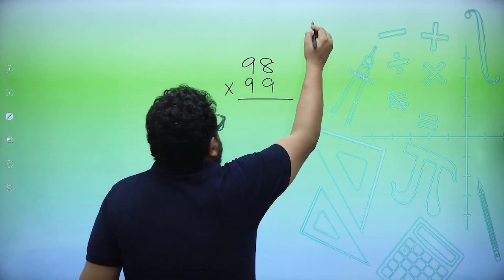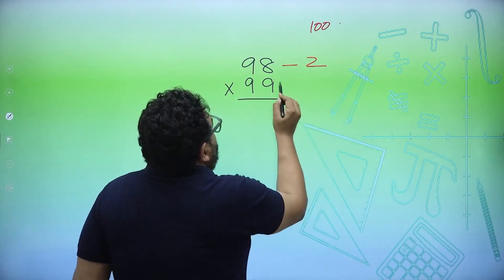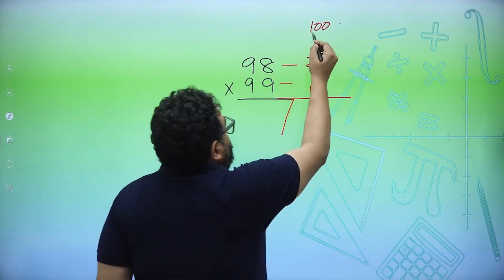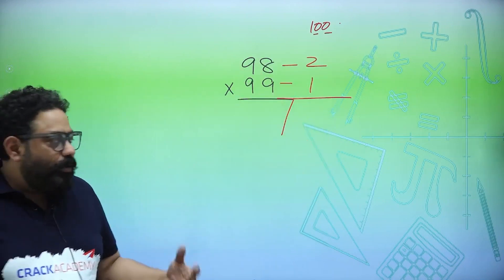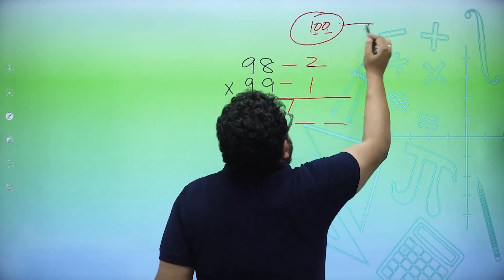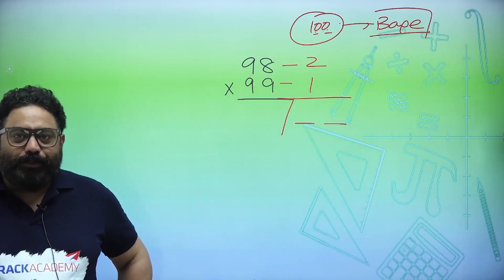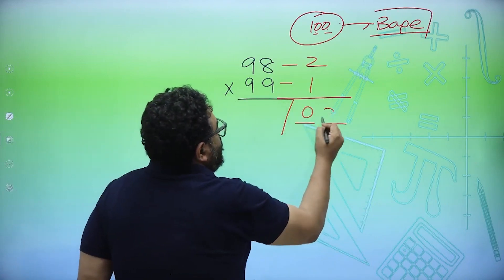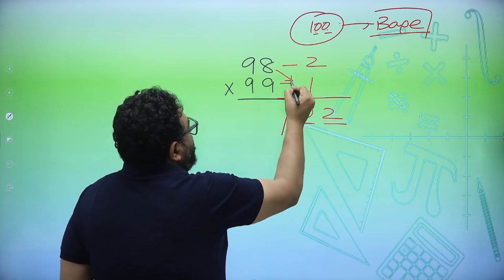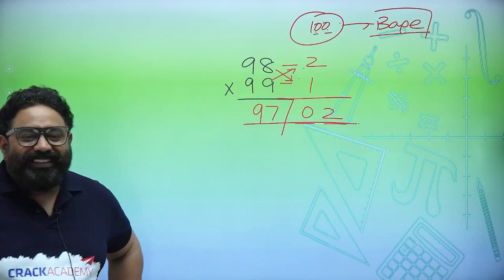For example, this question - both the numbers are near 100. How much less than 100? Minus 2 less than 100, and 99 is minus 1 less than 100. Make a partition. 100 has two zeros, so to the right of the partition, two spaces corresponding to two zeros in the base. We consider 100 to be the base figure, reference figure. Now multiply these two: 1 into 2 is 2, so 0 2. Minus 1 into minus 2 is 2. And the next step is, what is 98 minus 1? 97. What is 99 minus 2? 97. So your answer is 9702. 98 into 99 is 9702, so quickly!